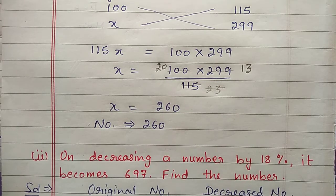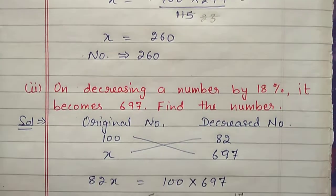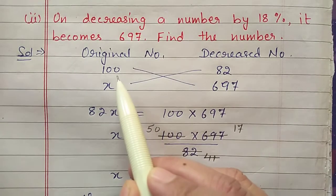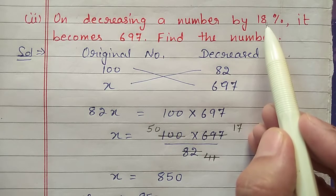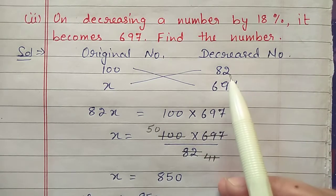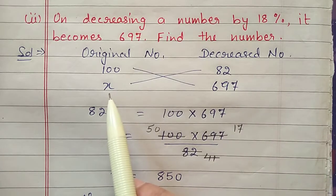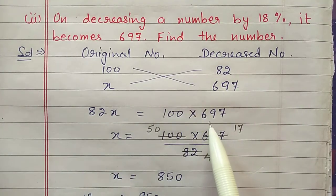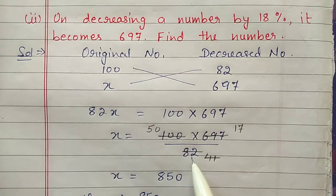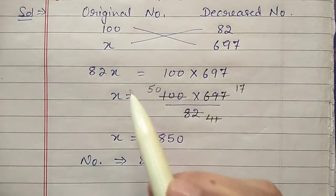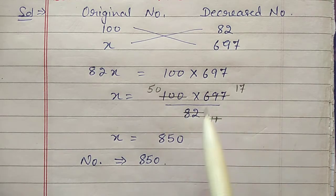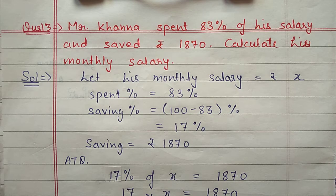Second part: on decreasing a number by 18 percent it becomes 697 — find the number. Suppose original number is 100, after 18 percent decrease it becomes 82 (100 minus 18). Let original number be x, after decreasing it becomes 697. Cross multiply: 82x equals 100 into 697. Shift 82 to the other side, cancel with the 2 table then 41 table — 41 goes 17 times into 697, so 50 into 17 is 850. Original number was 850.